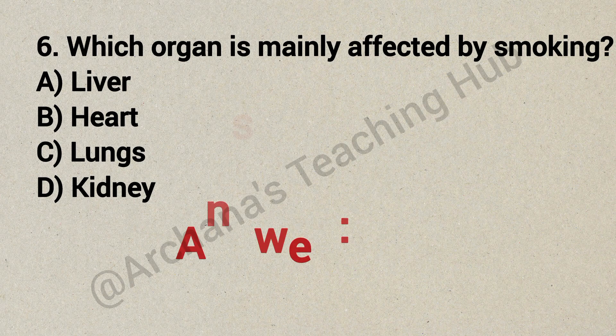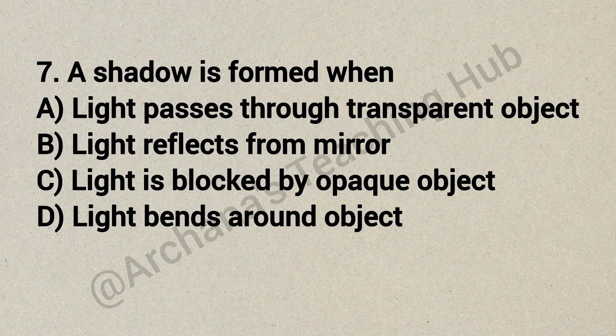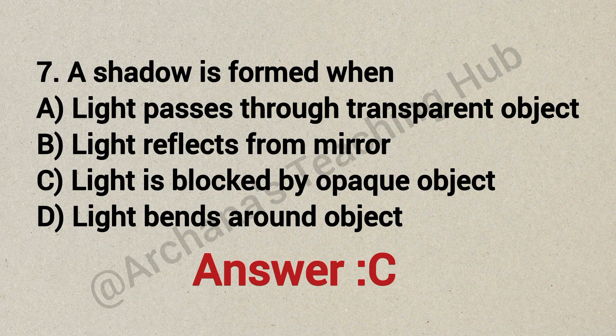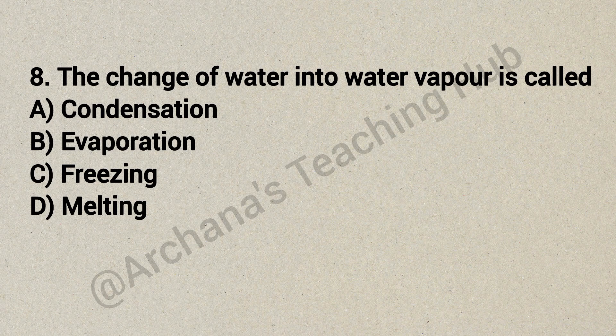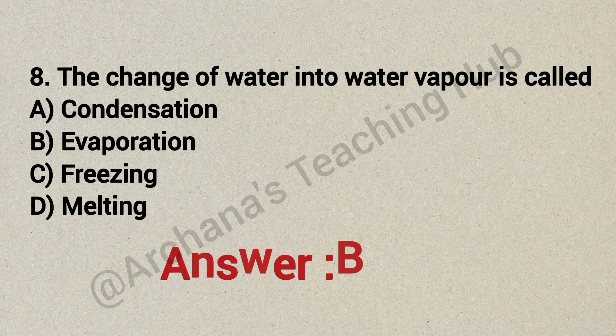Question 7: A shadow is formed when — Option A: light passes through a transparent object, Option B: light reflects from a mirror, Option C: light is blocked by an opaque object, Option D: light bends around an object. Correct answer is Option C: light is blocked by an opaque object. Question 8: The change of water into water vapour is called — Option A: condensation, Option B: evaporation, Option C: freezing, Option D: melting. Correct answer is Option B: evaporation.